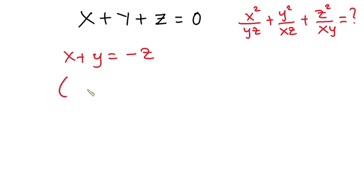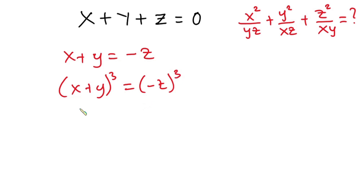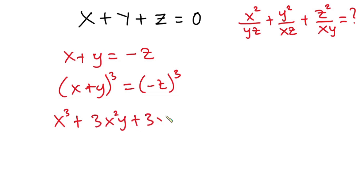So here we have x plus y to the third power is equal to negative z to the third power. Now let's use binomial expansion to expand this. So we have x to the third power, plus 3x squared y, plus 3xy to the power 2, plus y to the third power, and this is equal to negative z to the third power.